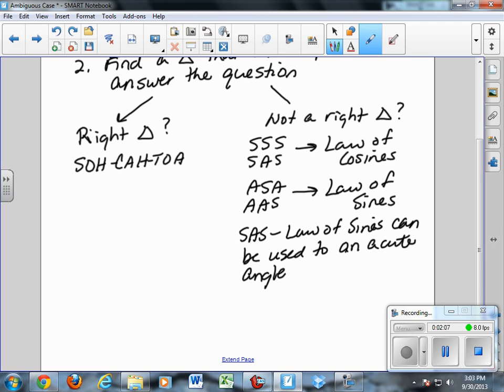So if you know that one of the angles may be obtuse, and that would be the biggest angle in the triangle, don't use it to find the biggest angle.